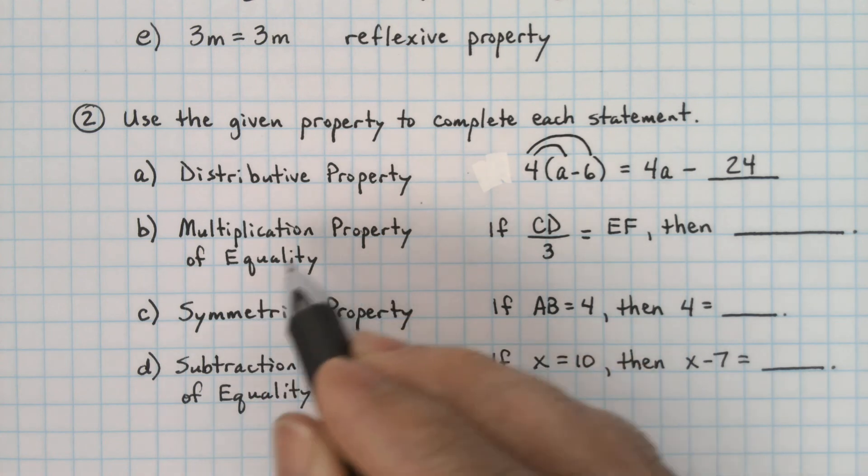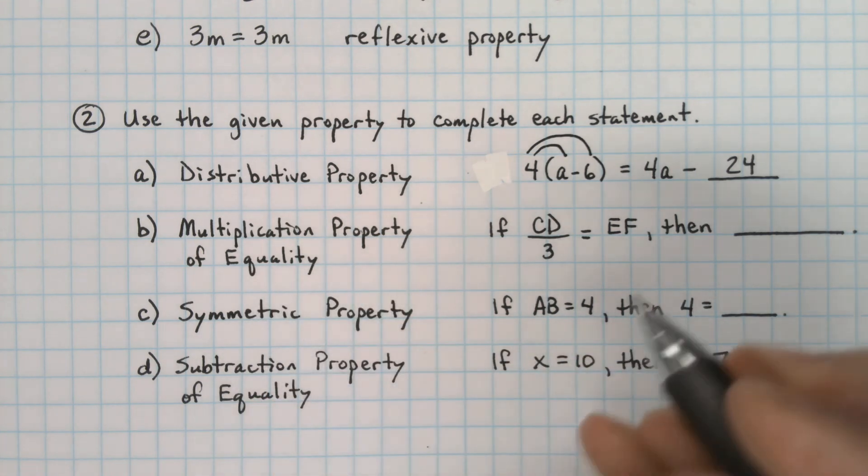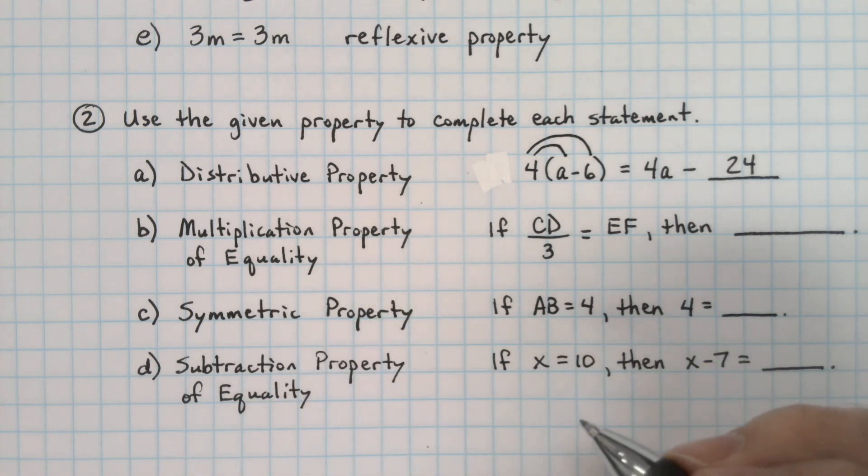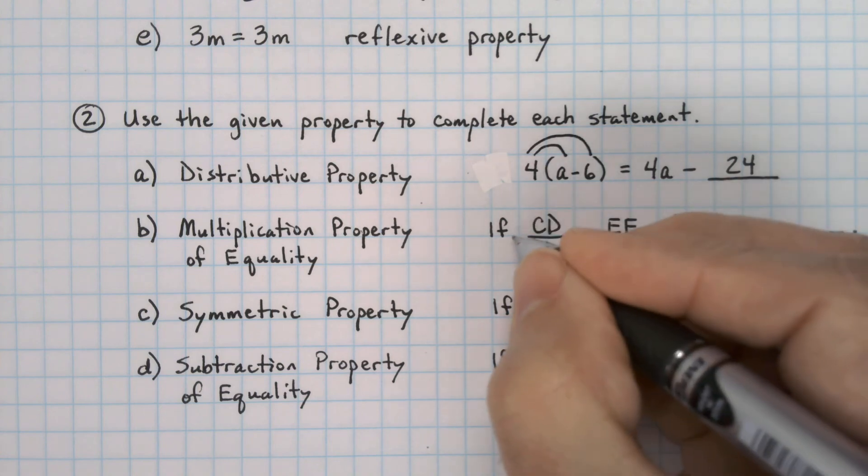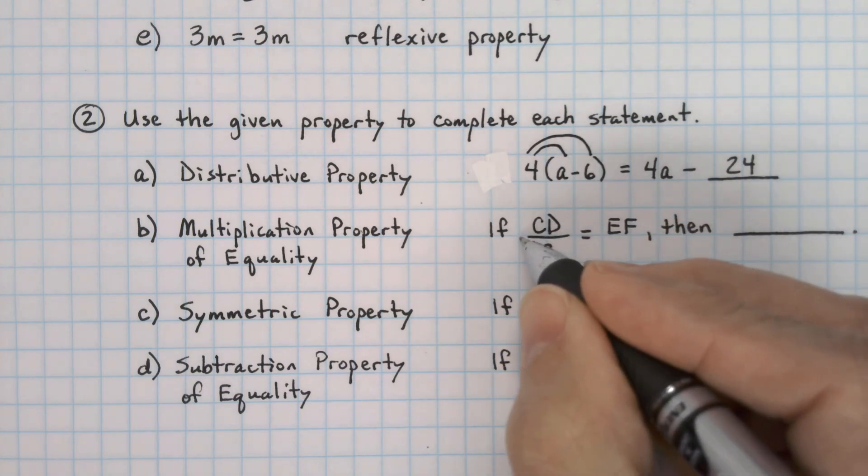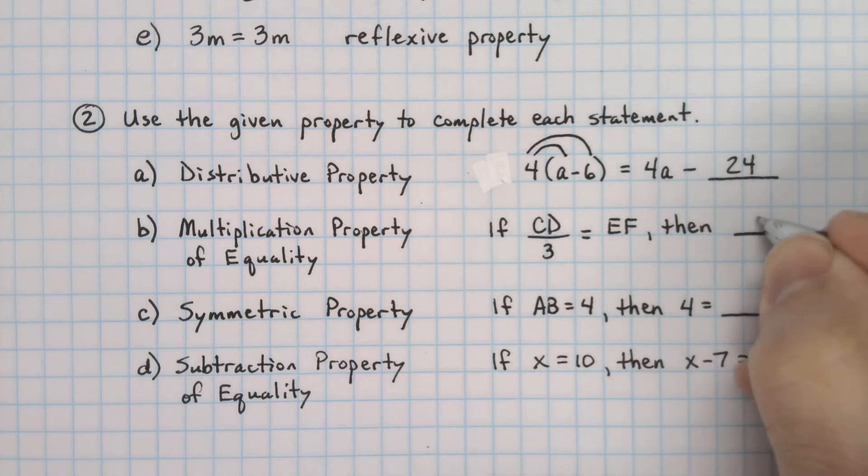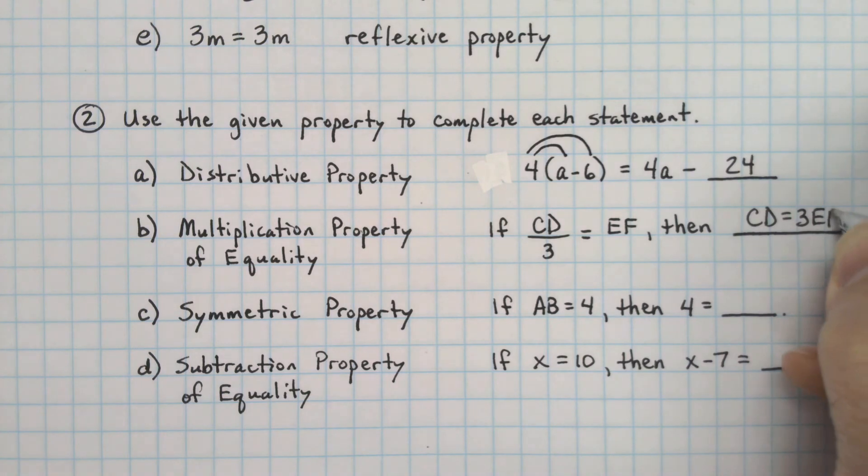Part B. The multiplication property of equality. You're going to have the same thing on each side that you multiply by. Here, the most common way that people would approach this is that you would get rid of the 3. So if you multiplied by 3 on the left, it would go away and leave you CD. And if you multiplied by 3 on the right, you would have 3EF.